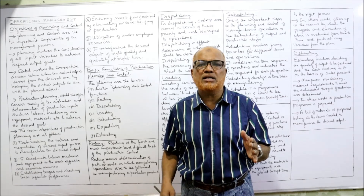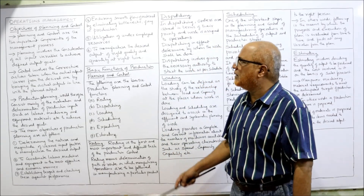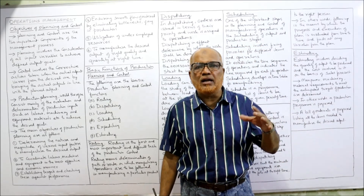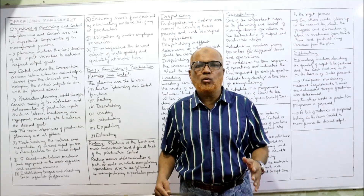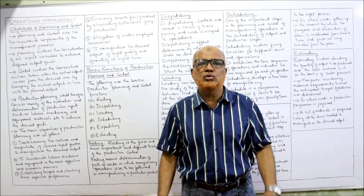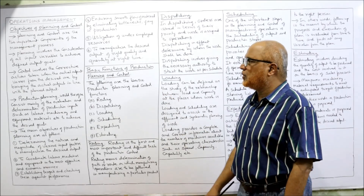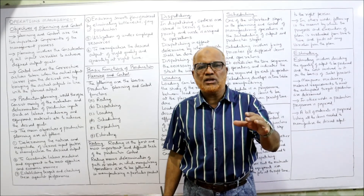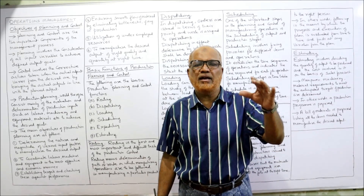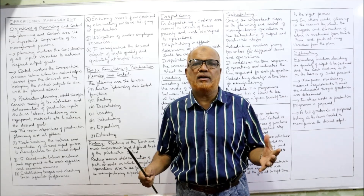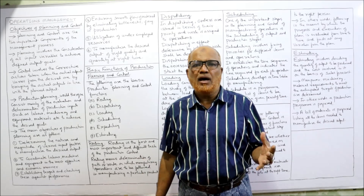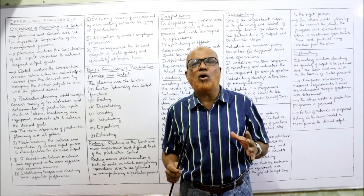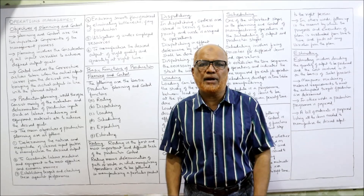Another objective is utilization of underemployed resources — if any resources are underutilized, we must make full use of all resources. The overall aim is to manufacture the desired output of the right quality and right quantity at the right time. These are some of the objectives of production planning.